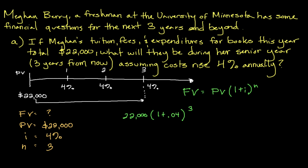We're going to take 1.04 to the third power — I'm going to go ahead and change colors here. What you should get is 1.1249. That's the result of taking 1 plus 0.04, so 1.04, to the third power. Now the only thing we have to do is multiply that by our $22,000. If you go ahead and punch that into your calculator, you're going to get $24,747.